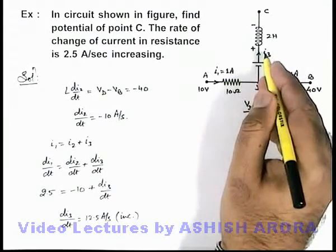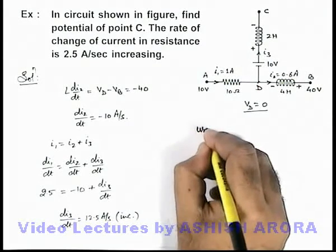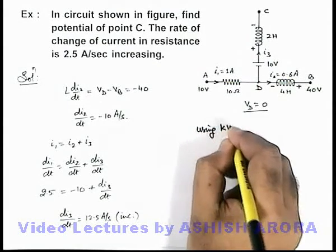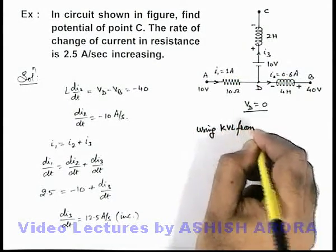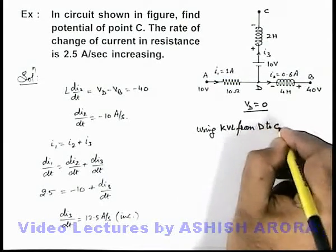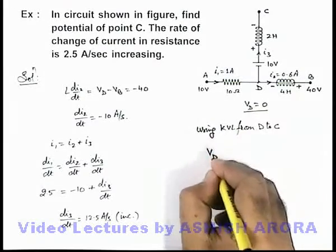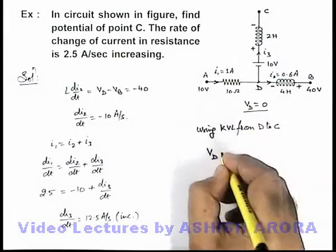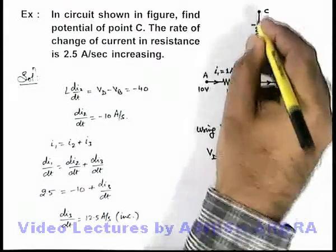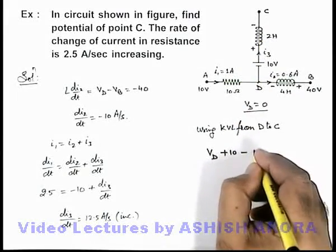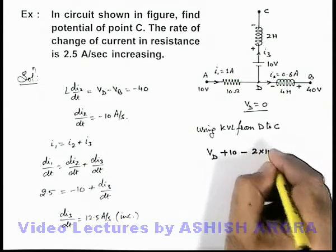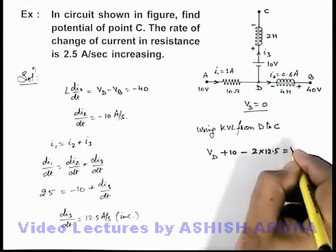So here in this situation we can write using Kirchoff's voltage law from D to C. Here we can write potential at D is V_D, then it'll be plus 10, then it'll be minus L di_y/dt which is 2 multiplied by 12.5, is equal to V_C.